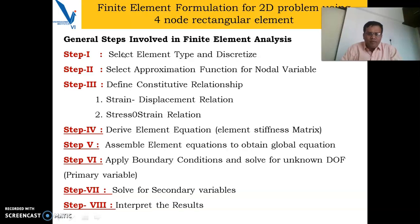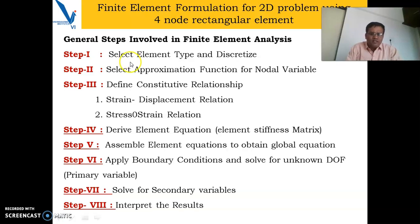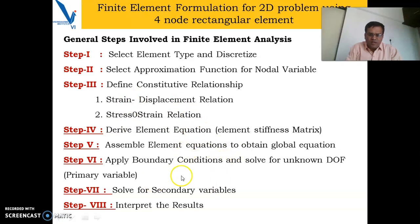Only the type of element, shape functions, and stress-strain relations change, but it goes through the same procedure. We will see step by step, though for this 2D problem the equations are very large. We will try to cover up to finding the Jacobian of transformation, because after that the procedure remains the same — only the number of equations becomes difficult to handle.